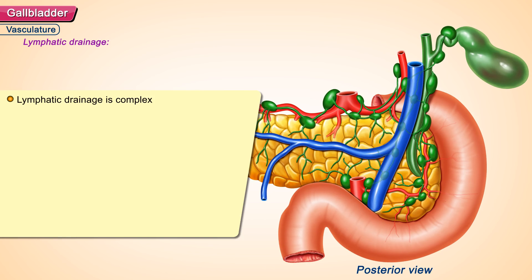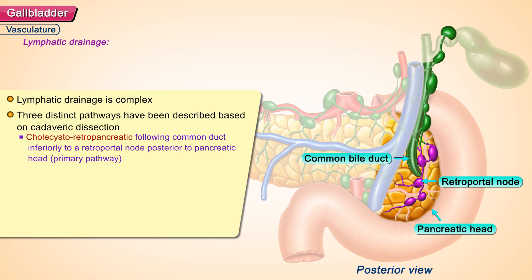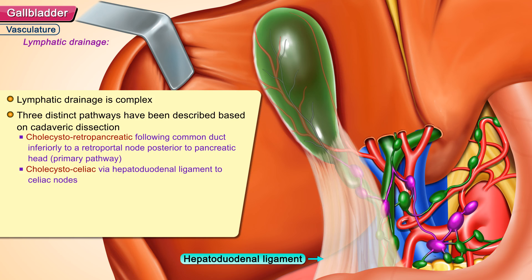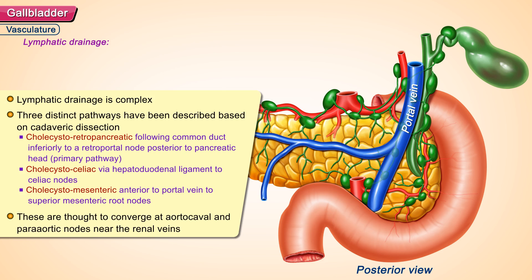Lymphatic drainage of the gallbladder is complex. Three distinct pathways have been described based on cadaveric dissection. The cholecystoretropancreatic pathway follows the common duct inferiorly to a retroportal node posterior to the pancreatic head, and is the primary pathway. The cholecystoceliac pathway runs via the hepatoduodenal ligament to the celiac nodes. The cholecystomesenteric pathway runs anterior to the portal vein to the superior mesenteric root nodes. These are thought to converge at the aortocaval and para-aortic nodes near the renal veins.